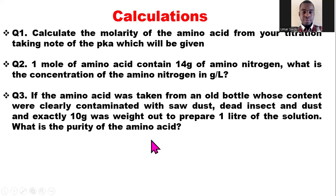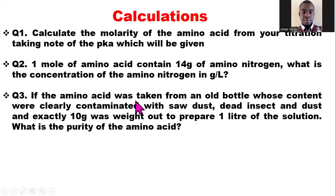The first question asks you to calculate the molarity of the amino acid from your titration, given the pKa. Question two asks: if one mole of the amino acid contains 14 grams of amino nitrogen, what is the concentration of amino nitrogen in grams per liter? Question three asks: if the amino acid was taken from an old bottle contaminated with sawdust, dead insects, and dust, and exactly 10 grams was weighed out to prepare one liter of solution, what is the purity of the amino acid?